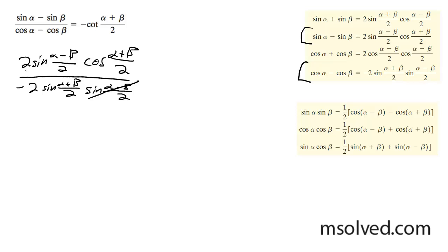So these two terms cancel out, the twos cancel out, and we're left with negative cosine alpha plus beta divided by 2, over sine alpha plus beta divided by 2, which simply becomes negative cotangent alpha plus beta divided by 2, which is what we're looking for.